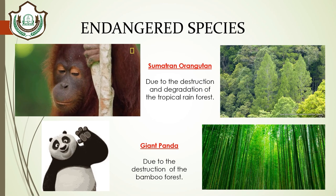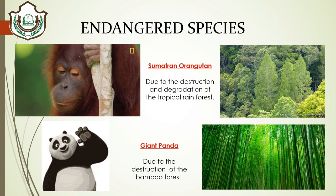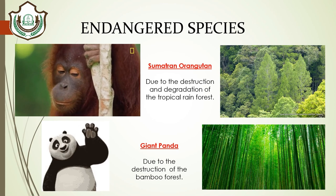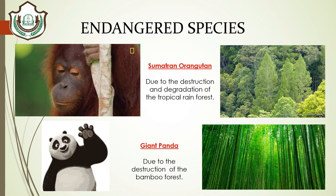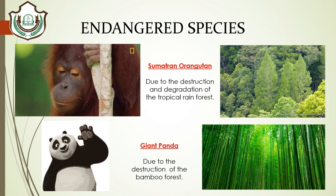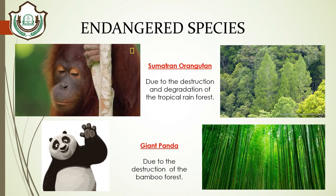Due to the destruction and degradation of tropical rainforest, these orangutans have become endangered. Next is the giant panda — these pandas live in bamboo forests, and due to the destruction of bamboo forests they have also become endangered.